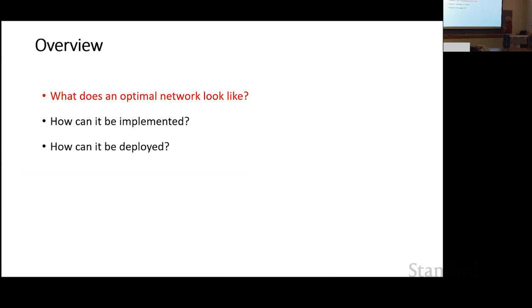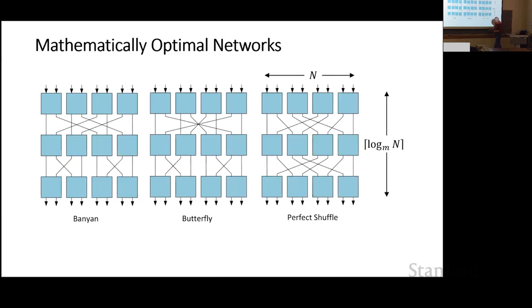Overview: I'll tell you what an optimal internet looks like, how it can be implemented, and how it can be deployed. Mathematically optimal networks come in three flavors: Banyan, Butterfly, and Perfect Shuffle. There were battles among grad students about which was better, until some poor grad student discovered they're all the same — if you replace each node with a washer and put elastics between them, you can rearrange the middle row and they're identical. That was the 'fabric wars.' The key result: N inputs can be routed in log_M(N) stages, where M is the fan-out — you just can't do any better.